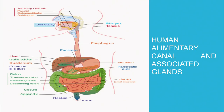Let us move on to extracellular digestion and the human alimentary canal. The structures required for digestion are the alimentary canal organs and the glands associated with it. The first part is the oral cavity, in which you can also see a tongue and certain salivary glands — parotid, submaxillary and sublingual — which are present around the oral cavity.